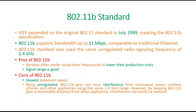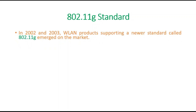However, by keeping 11b gear a reasonable distance from other appliances, interference can easily be avoided. The next standard is 802.11g. In the years 2002 and 2003, products supporting the newer standard called 11g came into the market.